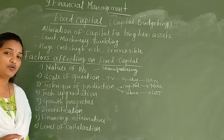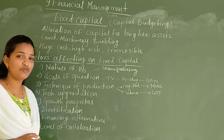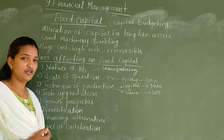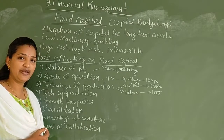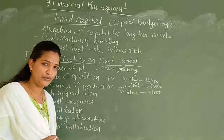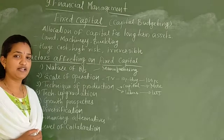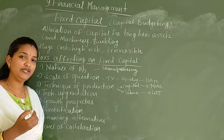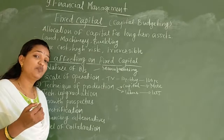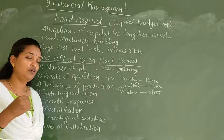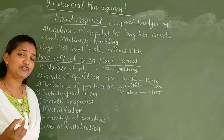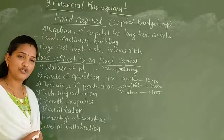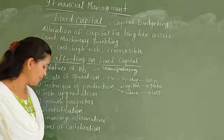The seventh factor is financing alternatives. Rather than investing a large amount of fixed capital to purchase fixed assets, you can take advantage of financing alternatives. One such option is lease financing, which works on a rent basis. Instead of purchasing a building, machinery, or furniture, you can take them on a rent or lease basis, which means you require less fixed capital.